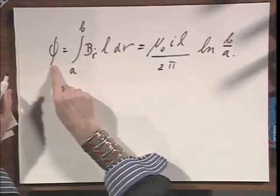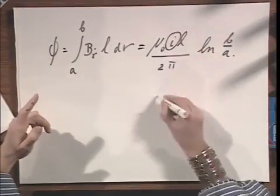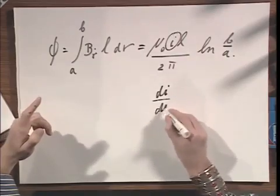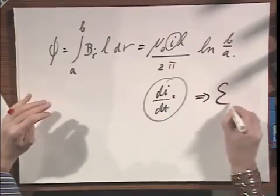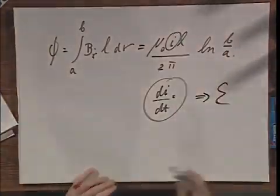So it's simply a matter now of taking the time derivative of this one, and what you're going to see is that what is very important is the magnitude of the dI/dt. The larger the dI/dt, the larger the induced EMF in the system.